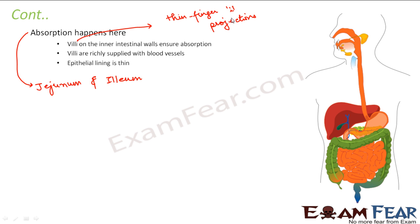These thin, hair-like villi increase surface area, allowing more absorption. Blood vessels in the villi carry nutrients to every cell. The villi absorb nutrients from the digested food and transfer them to blood vessels, which then distribute nutrients throughout the entire body.